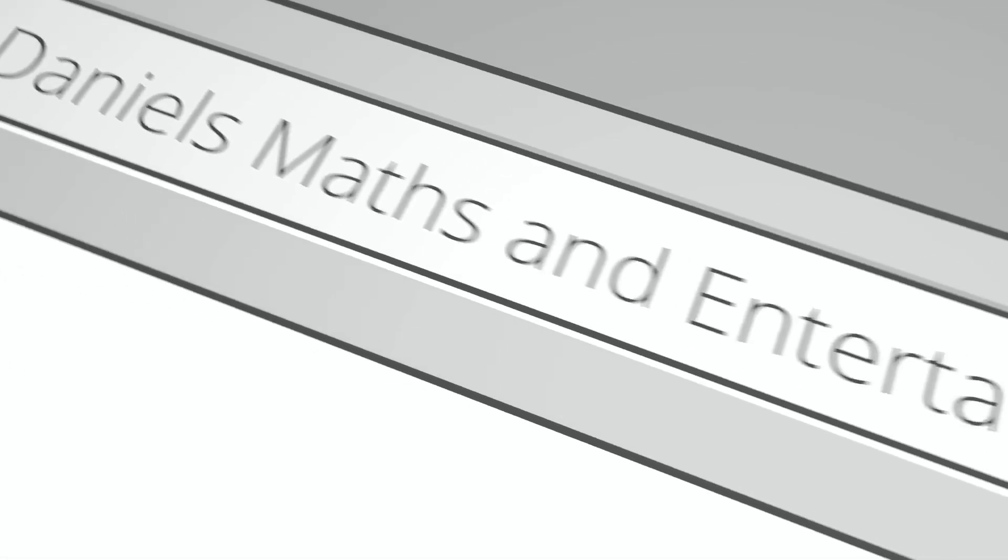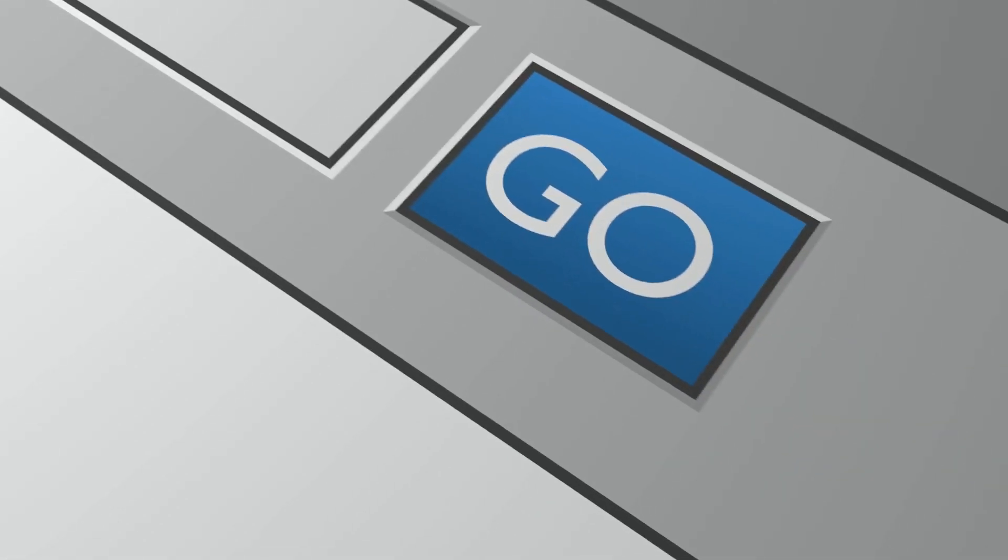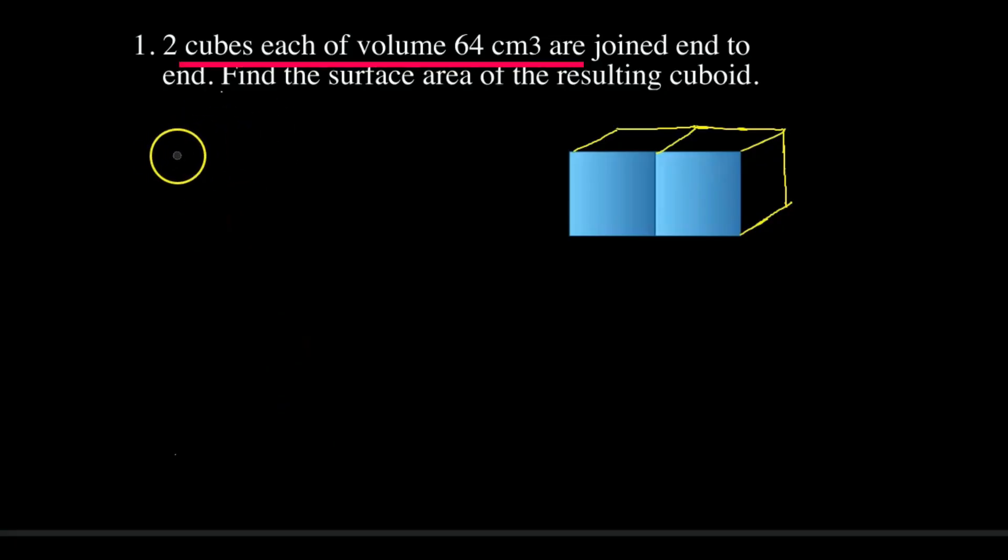Hello friends, welcome to our channel. The question is: two cubes each of volume 64 centimeter cube are joined end to end. Find the surface area of the resulting cuboid.